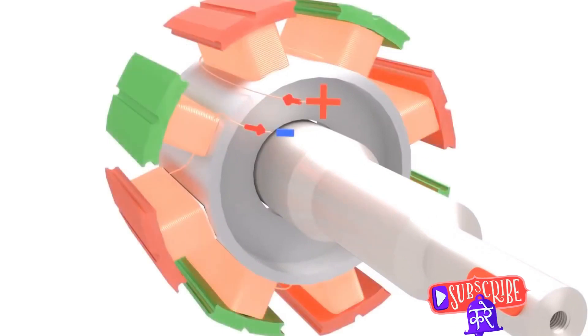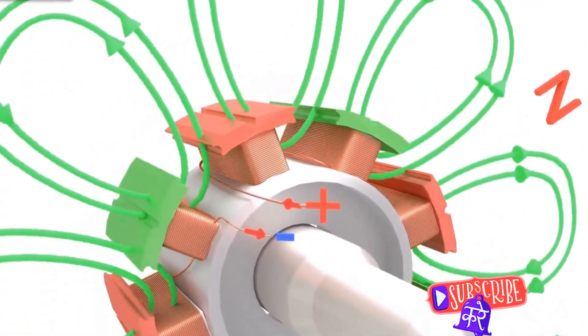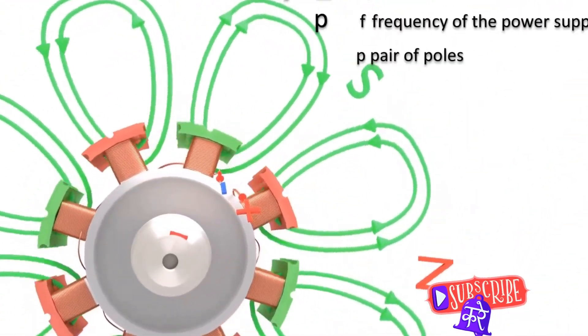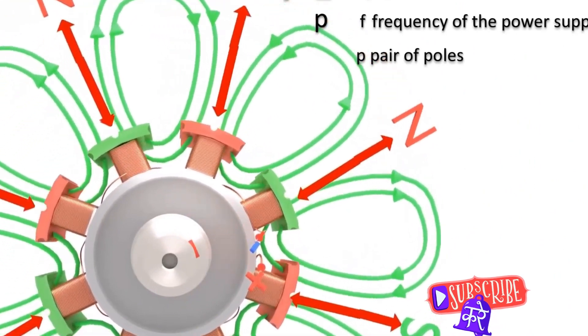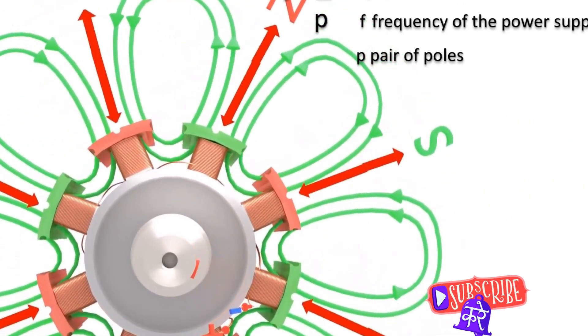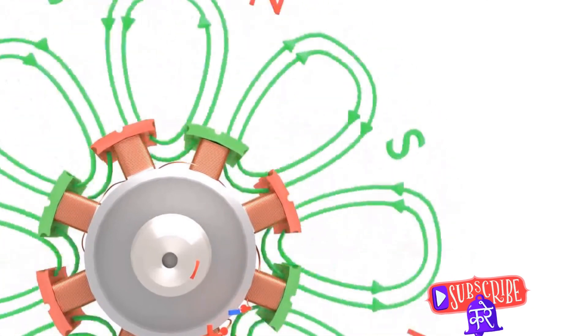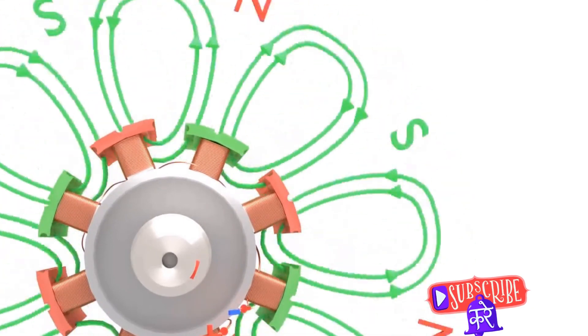To understand the fundamental principles of a synchronous motor, let's first imagine a magnetic field as a powerful invisible force, much like gravity, but with a pull that can be directed and controlled. This magnetic field is produced within the motor by a set of electromagnets, dancing to the rhythm of an alternating current or AC.